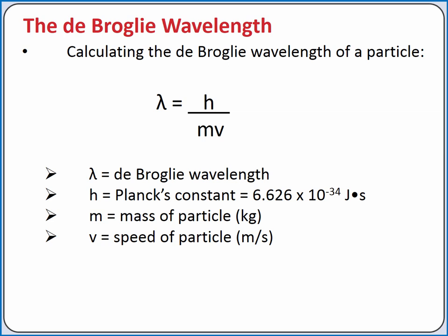Notice that this is the speed of the particle, v, instead of frequency, nu. Also notice that the mass of the particle must be in kilograms in this equation. This is because one joule equals one kilogram meter squared per second squared.